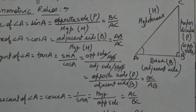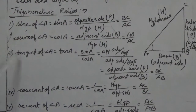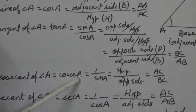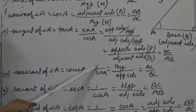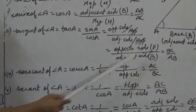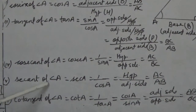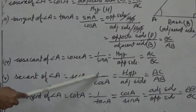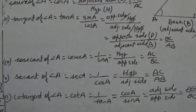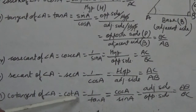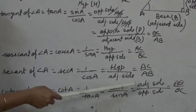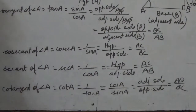Now the reciprocal or inverse ratios: the inverse of sin is cosecant of angle A, also called cosec A. Cosec A equals 1 upon sin — that is hypotenuse upon opposite side — which is AC upon BC. Secant of angle A, also called sec A, equals 1 upon cos — hypotenuse upon adjacent side — that is AC upon AB. The inverse of tan A is cot A. Cot equals 1 upon tan A — that is adjacent side upon opposite side — which is AB upon BC.